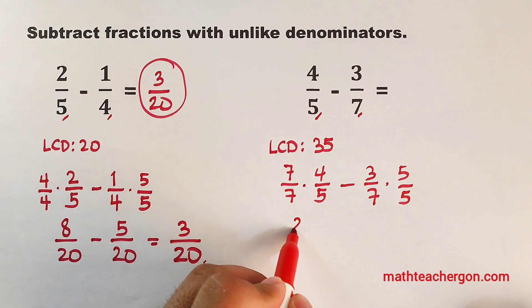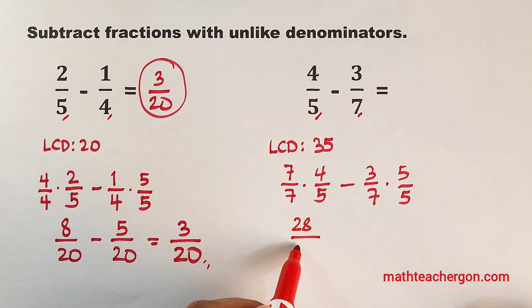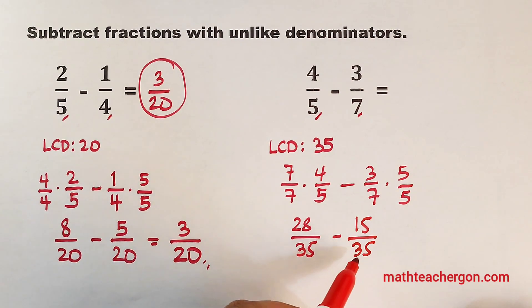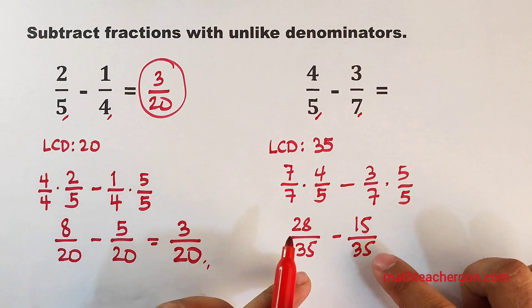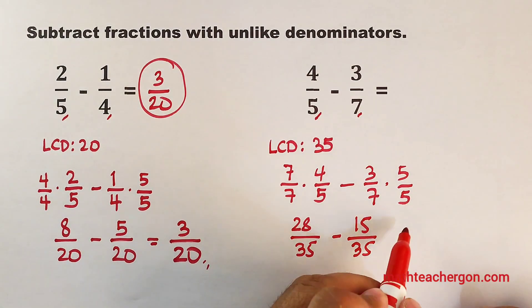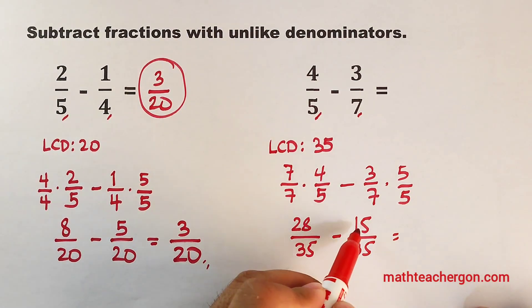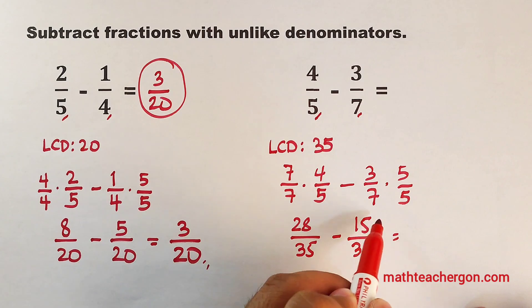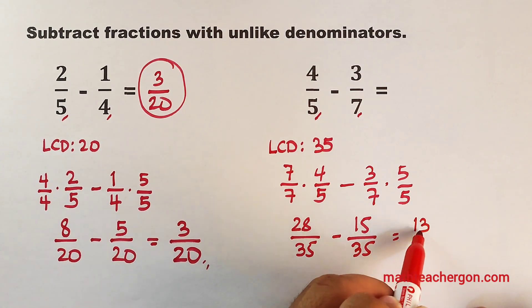7 times 4, that is 28 over, this will become 35. Minus, 3 times 5, that would be equal to 15 over 35. Since we already have the same denominators, let us now subtract the numerators. 28 minus 15, that would be 13 over 35.